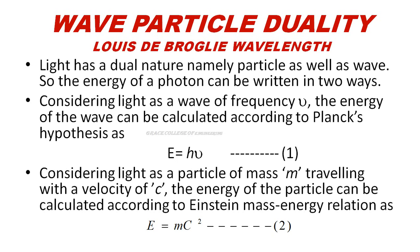Light has a Dual Nature, that is Particle as well as Wave Nature. In terms of Wave, we write the Energy Equation as E is equal to H nu, where nu is frequency and H is Planck's constant. For the Particle, using Einstein's mass-energy relation, E is equal to MC squared.